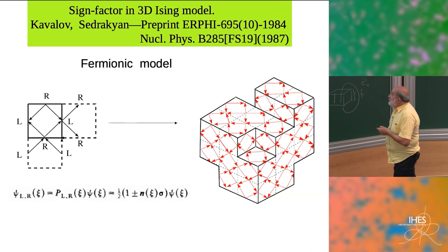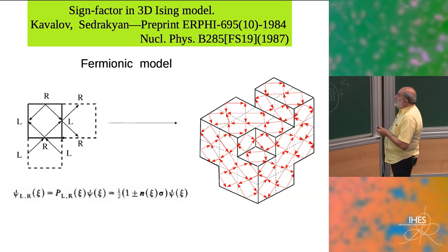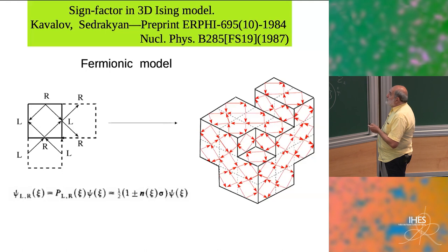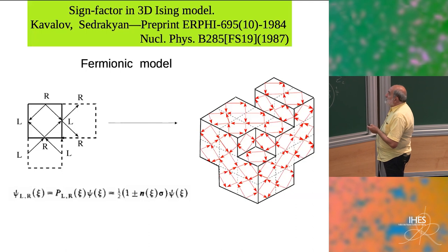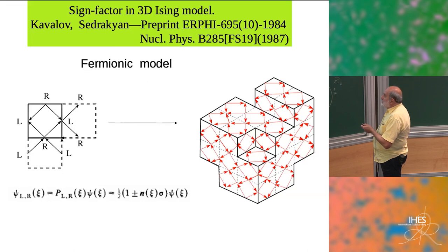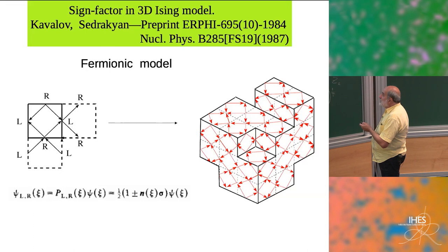For that, let's take the middle point and place right and left fermions there, making arrows. From the right fermion, the arrow goes out; from the left fermion, it goes in from the opposite side. The arrows go out from one middle point and into the next middle point. In the neighboring plaquette, they continue: an arrow enters this point, and in the neighbor plaquette they exit.